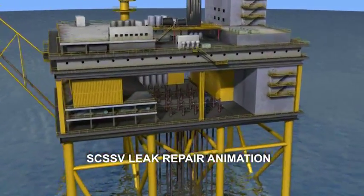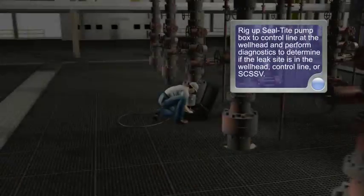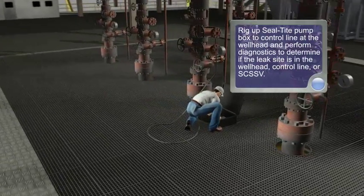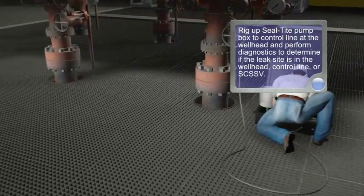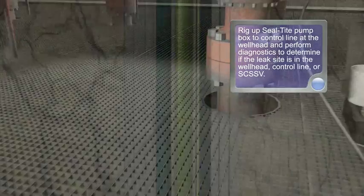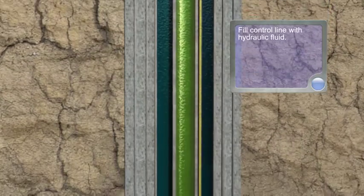SCSSV Leak Repair Animation. Rig up seal-tight pump box to control line at the wellhead and perform diagnostics to determine if the leak site is in the wellhead, control line, or SCSSV.